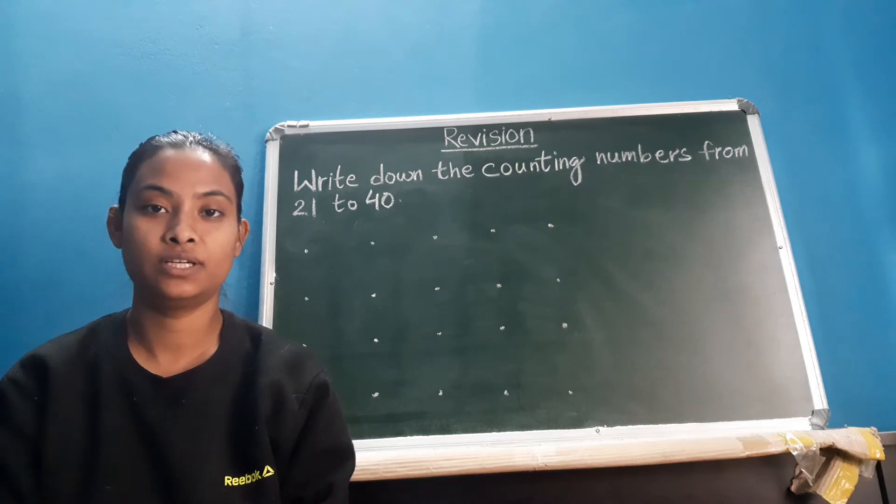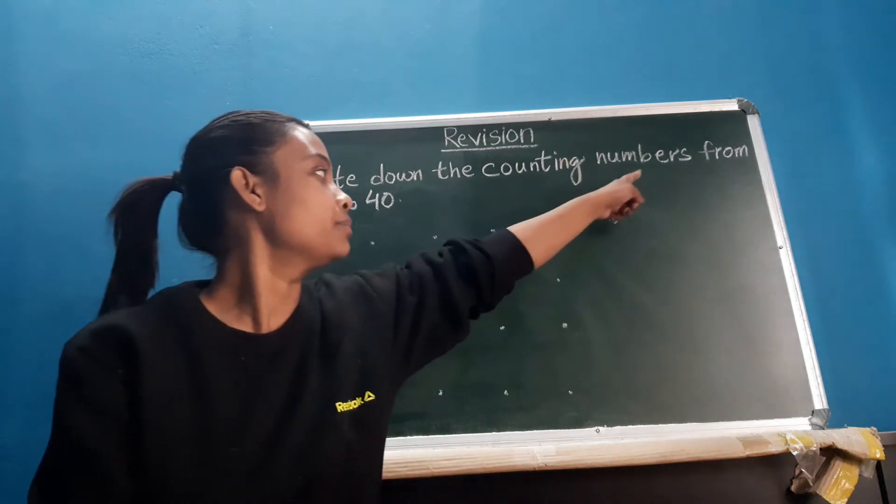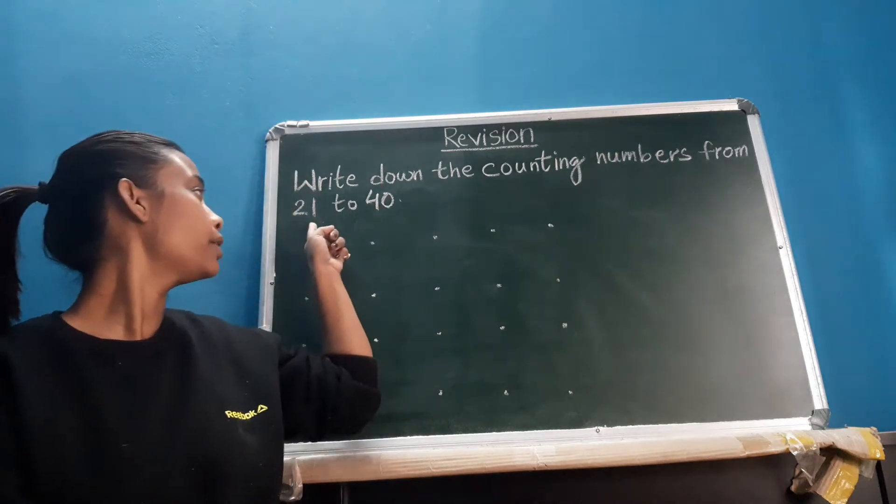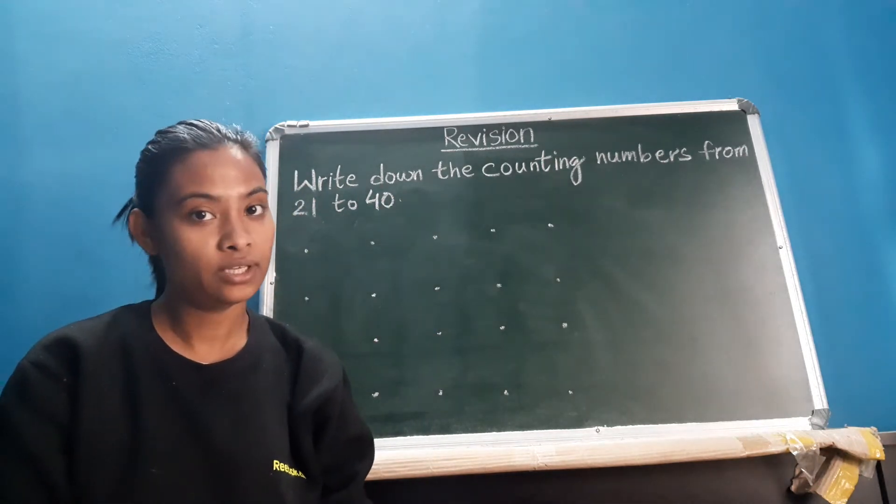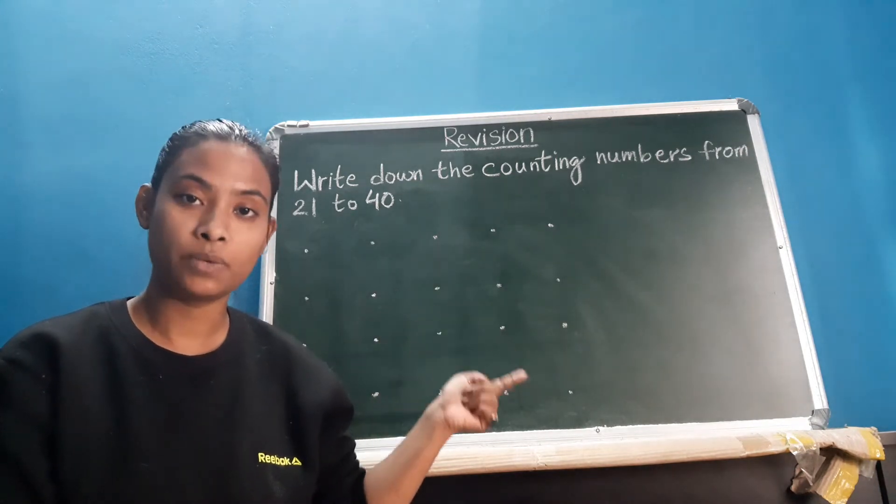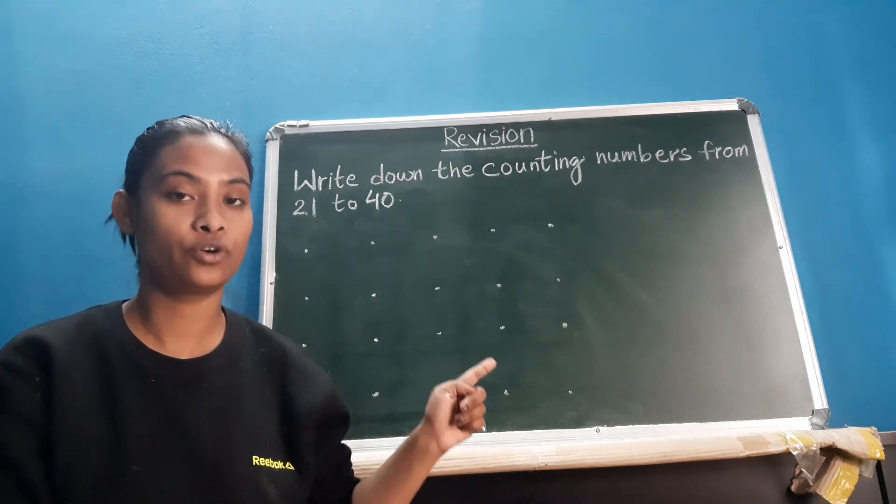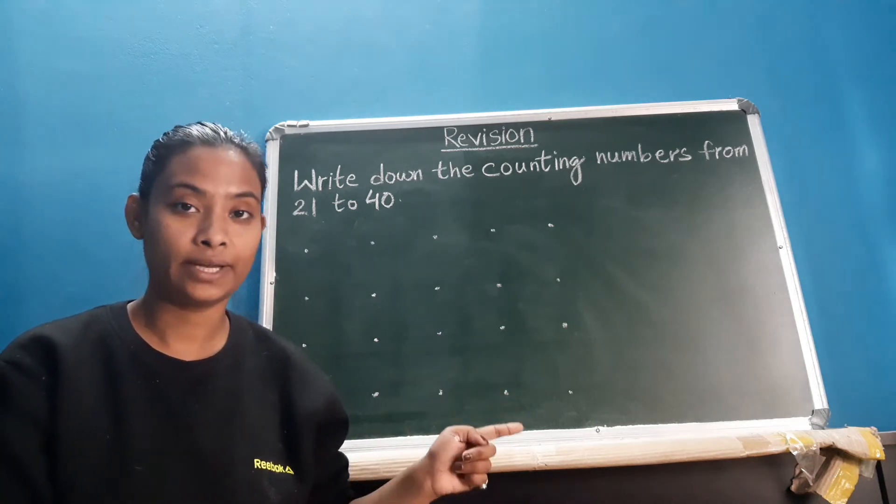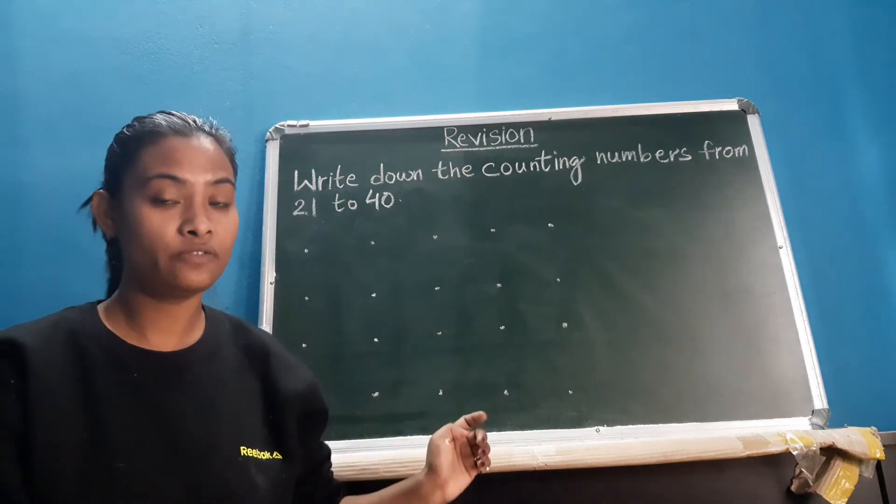So today in our math class we will learn to write down the counting numbers from 21 to 40. This is revision for your upcoming 5th online unit test.